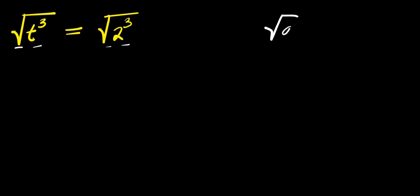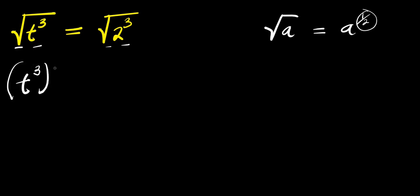What we are going to do is consider this identity: if you have square root of a, this simply means a to the power of 1 over 2, because the square root is this exponent. So we apply the same identity here — we have t power 3, raised to the power of 1 over 2.